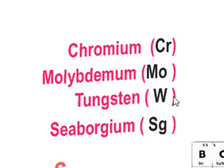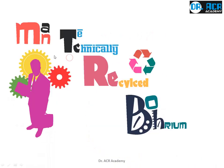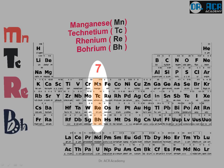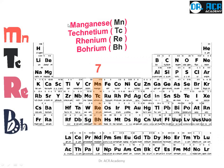Now we come to the seventh group. There was a man who could recycle anything. Another man challenged that he could not recycle borium. So the man technically recycled borium. Man, technically recycled borium. This is how it is linked to the periodic table, and these are its real names.